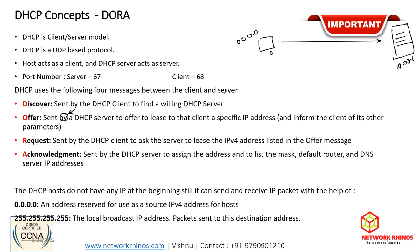In the Discover packet, the source IP will be 0.0.0.0 — because the PC has no IP address yet. The destination IP will not be the server's IP, because the PC doesn't know who the server is — that's why it's discovering. So the destination IP will be 255.255.255.255, which is the broadcast IP address. Once the DHCP server receives the Discover packet, it replies with an Offer message.